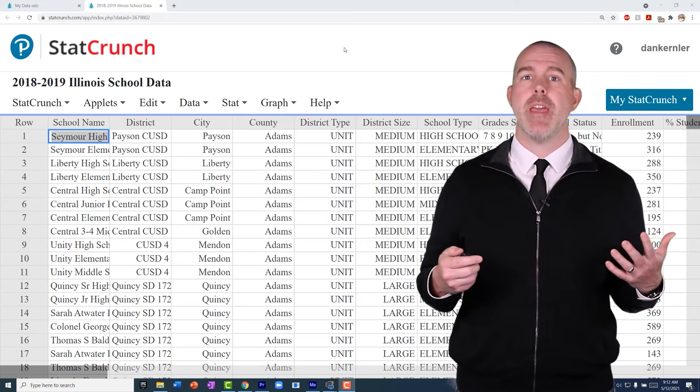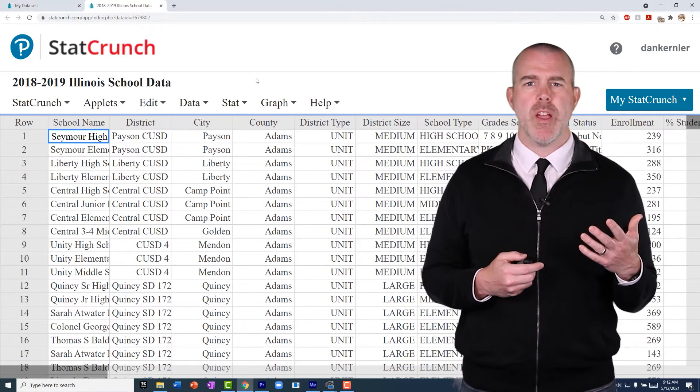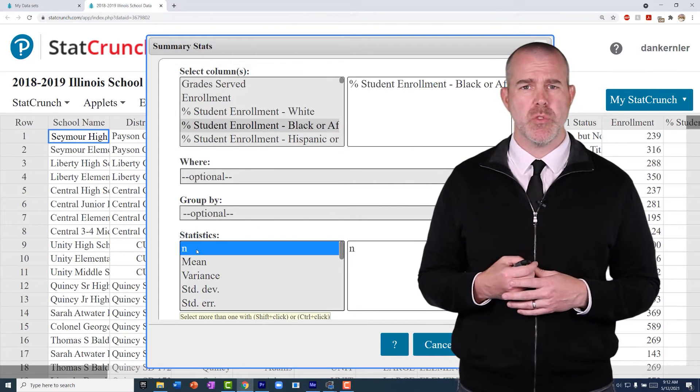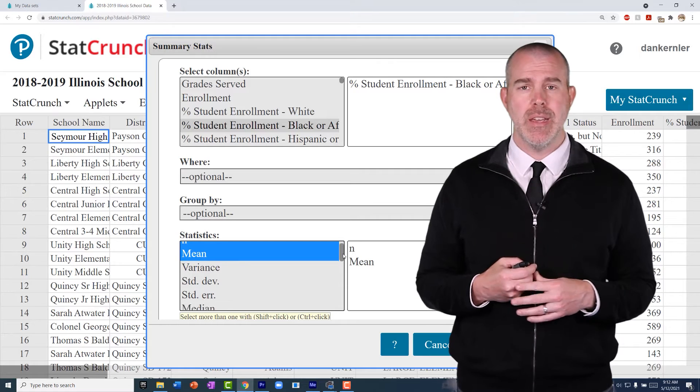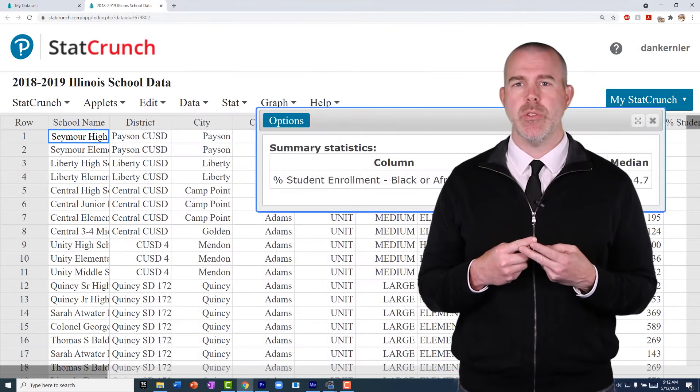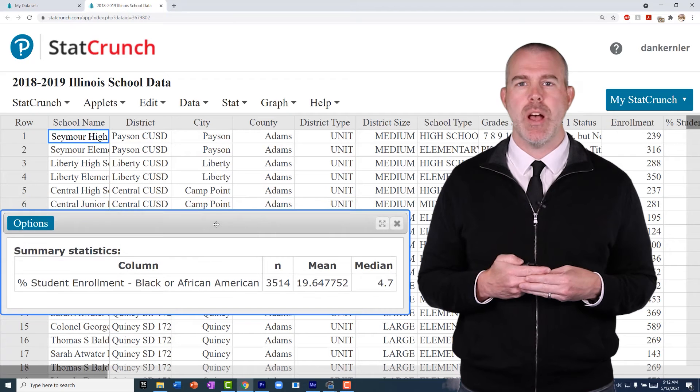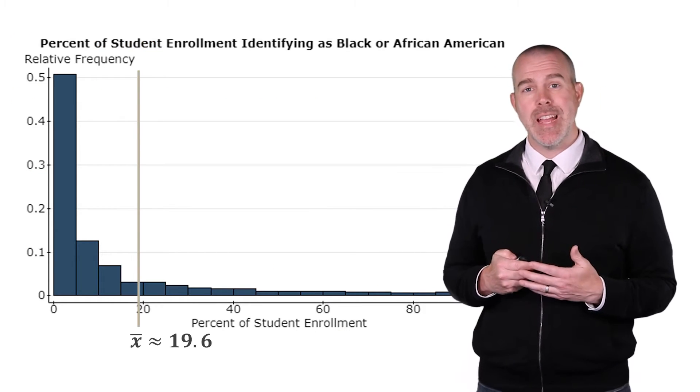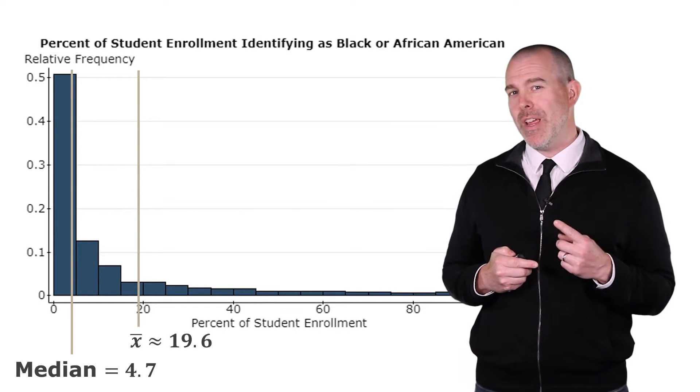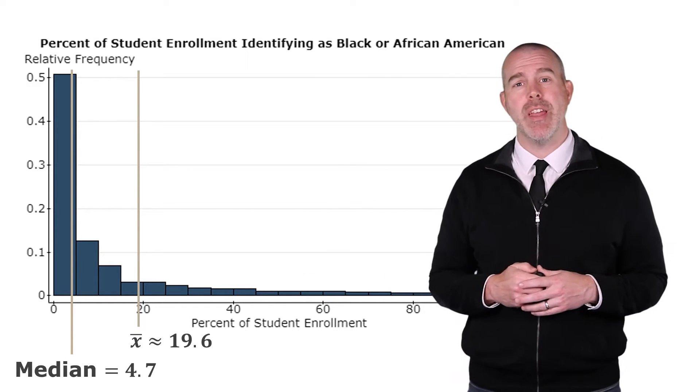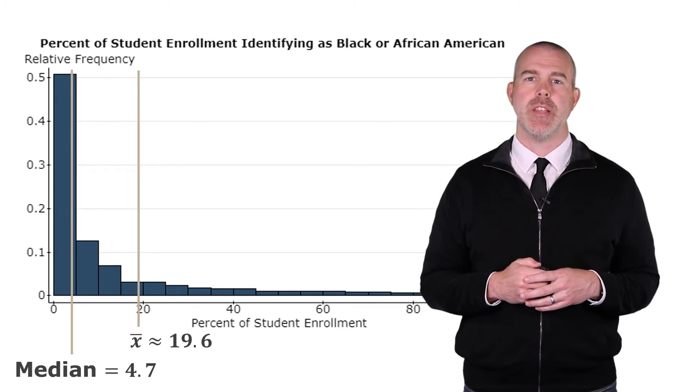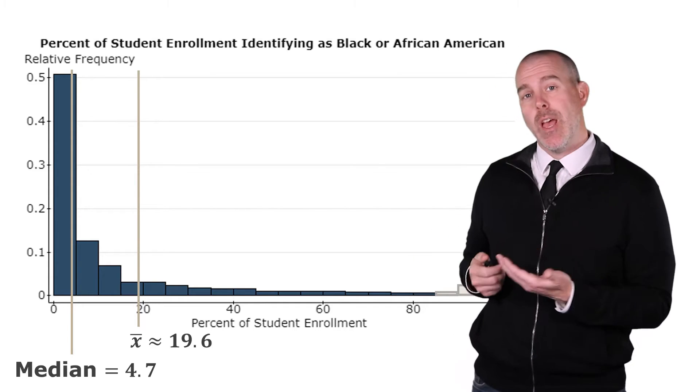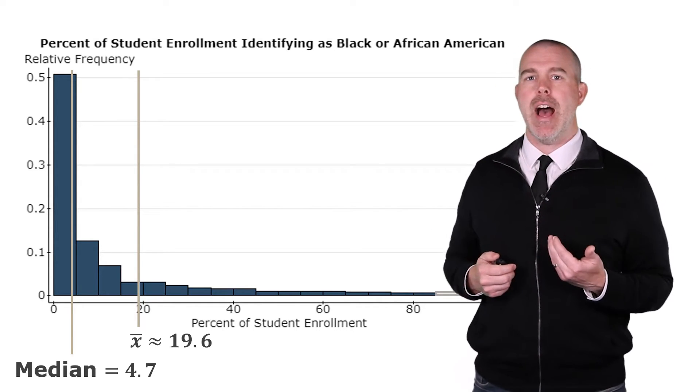Let's use StatCrunch for this. Same menu, stat, columns, and then choose our variable. Let's look at the 2018-2019 school data and look at the percent of students who are black or African American. Let's do the sample size, and let's do the mean and the median as well. Here's the histogram, and we can see that the mean is 19.6, but the median is way over here, 4.7. The median is 4.7, pretty small.